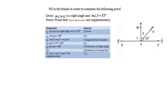Statement 1: measure angle WYZ is a right angle and measure angle 3 equals 53 degrees — given. Statement 2: measure angle WYZ equals 90 degrees, because that's the definition of a right angle. Statement 3: measure angle 2 plus measure angle 3 equals measure angle WYZ, by the angle addition postulate — adding those two angles together gives the total angle WYZ.